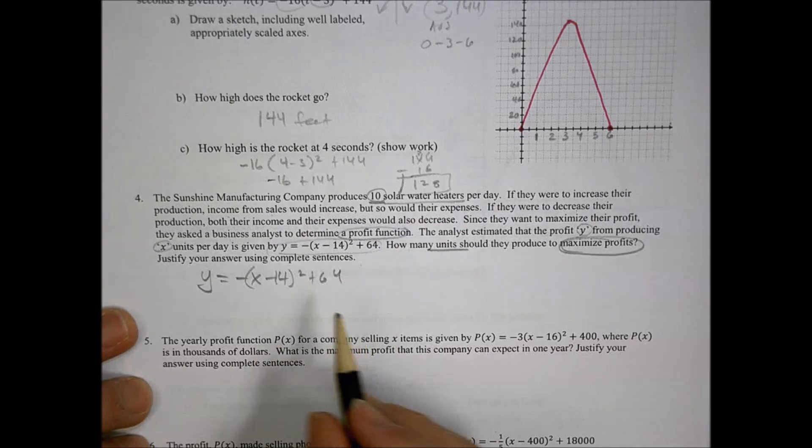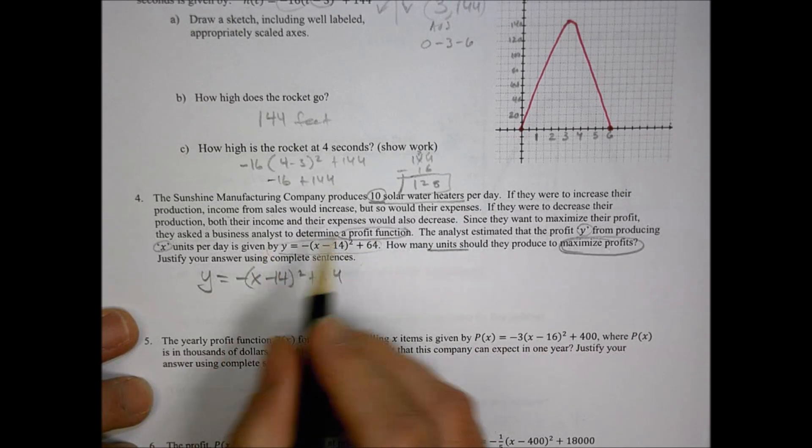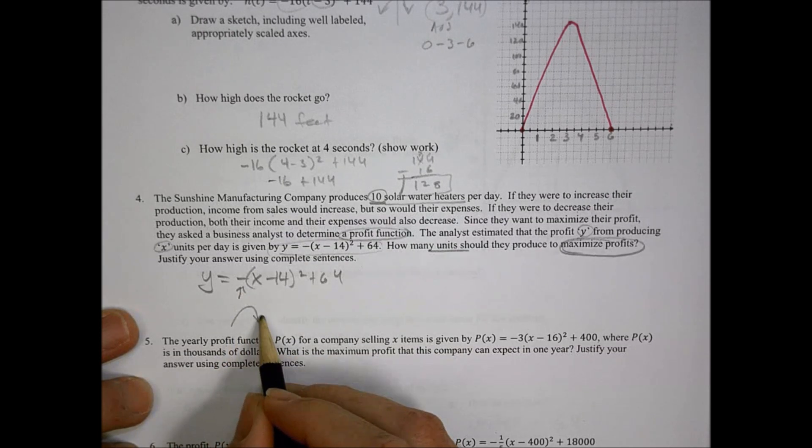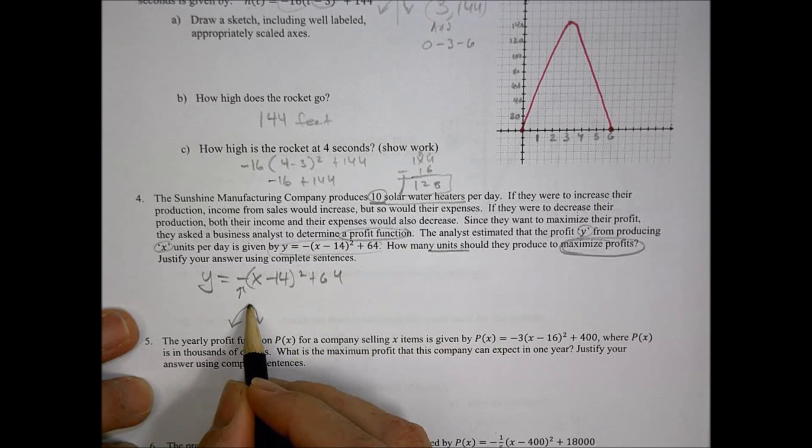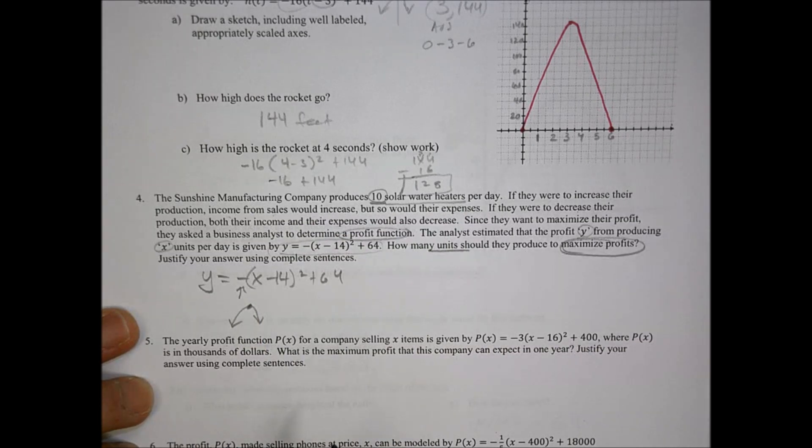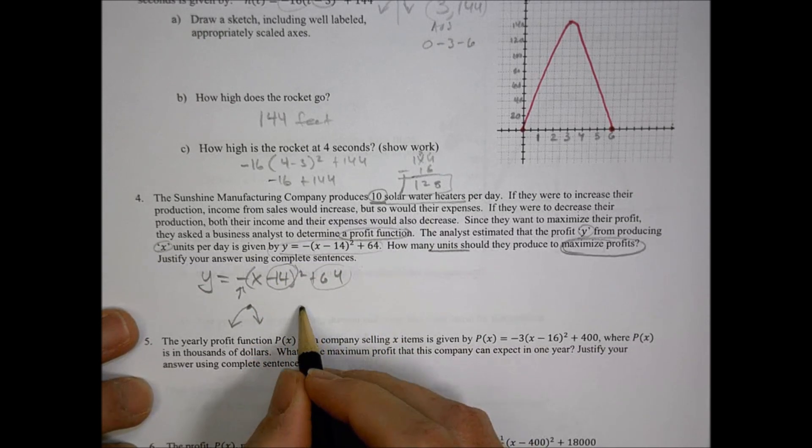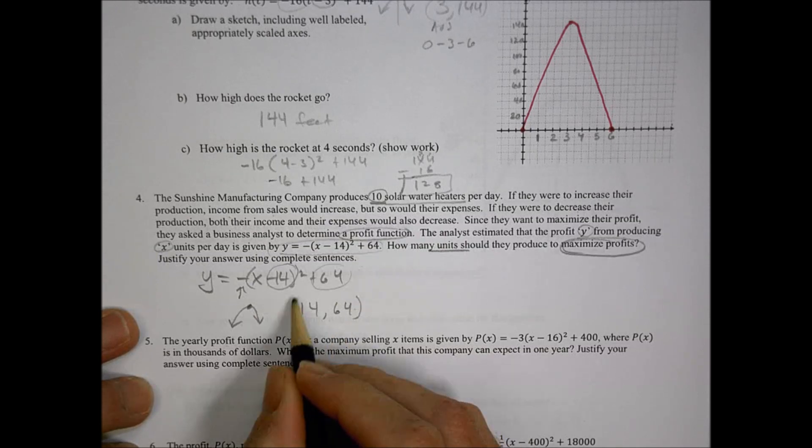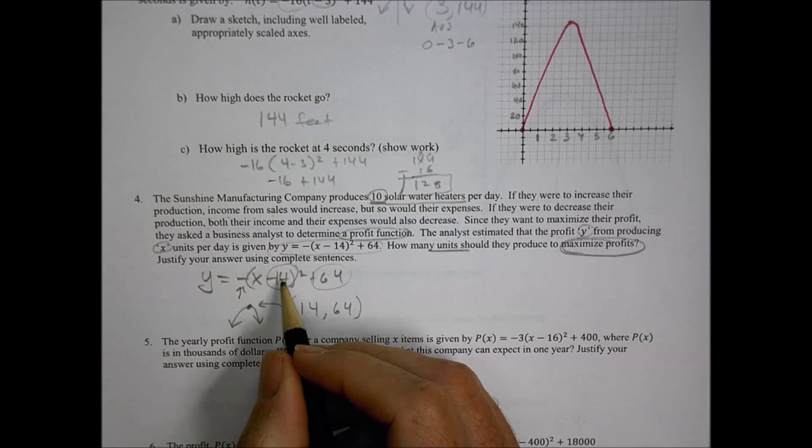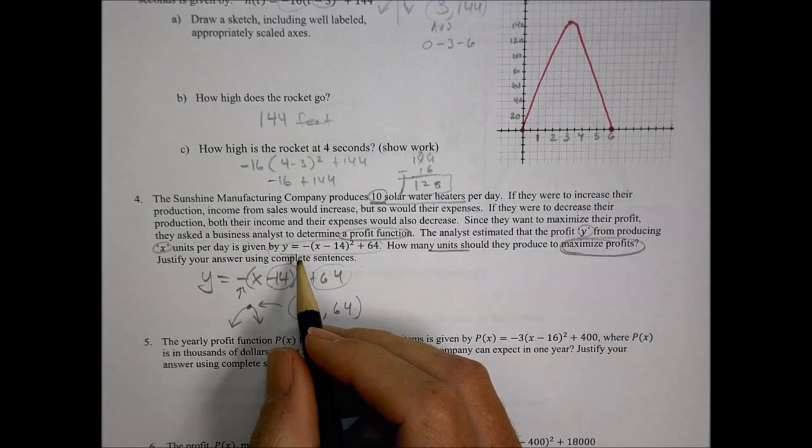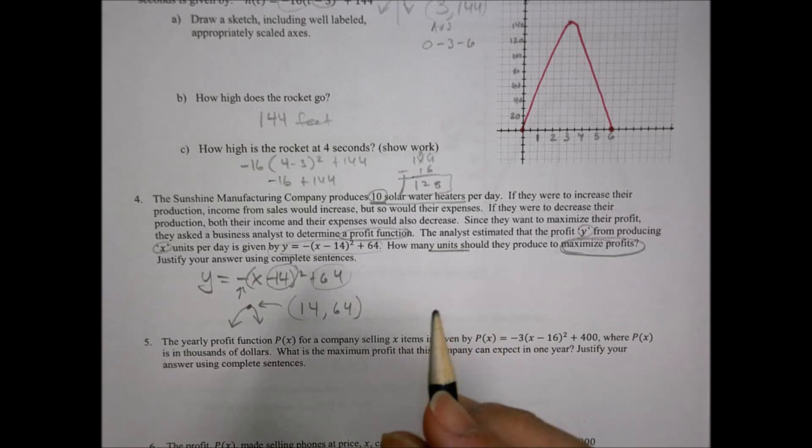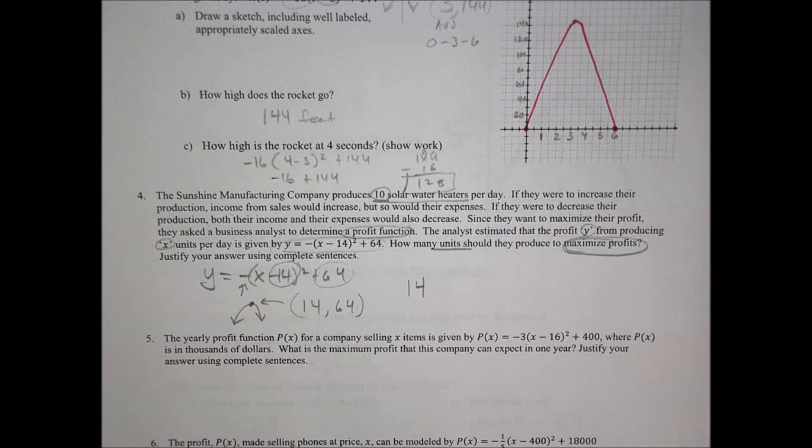They asked the business analysts to determine a profit function. The analysts estimate the profit Y from producing X units to be this equation. How many units should they produce to maximize profits? We see it has a negative value, so the graph is going to go like this with a maximum point. That maximum value is located at 14 comma 64 using the vertex form. So 14 represents the maximum number of units you'd make to maximize your profits. We're going to say 14 because that's where the vertex is going to be.